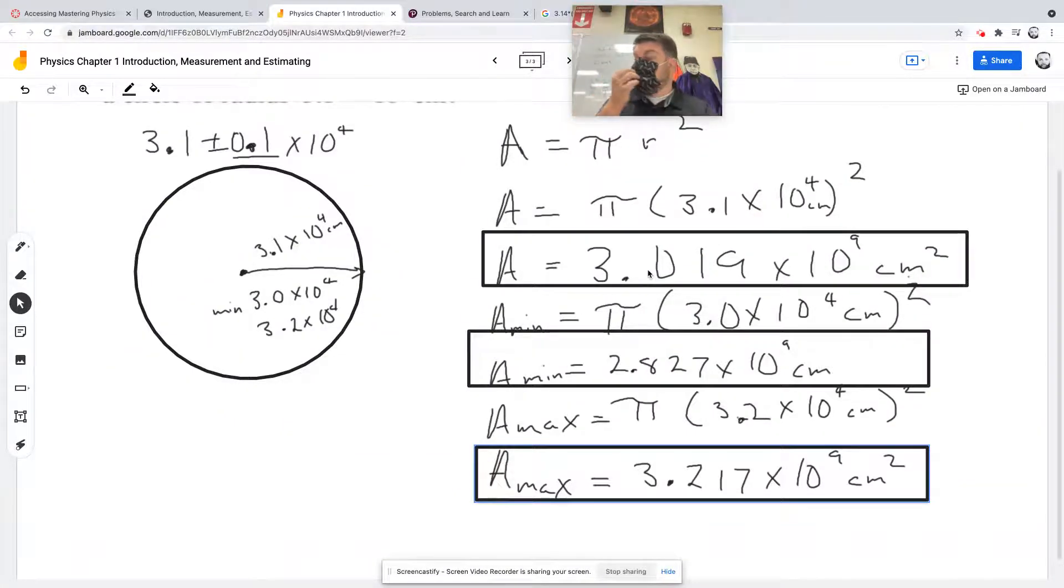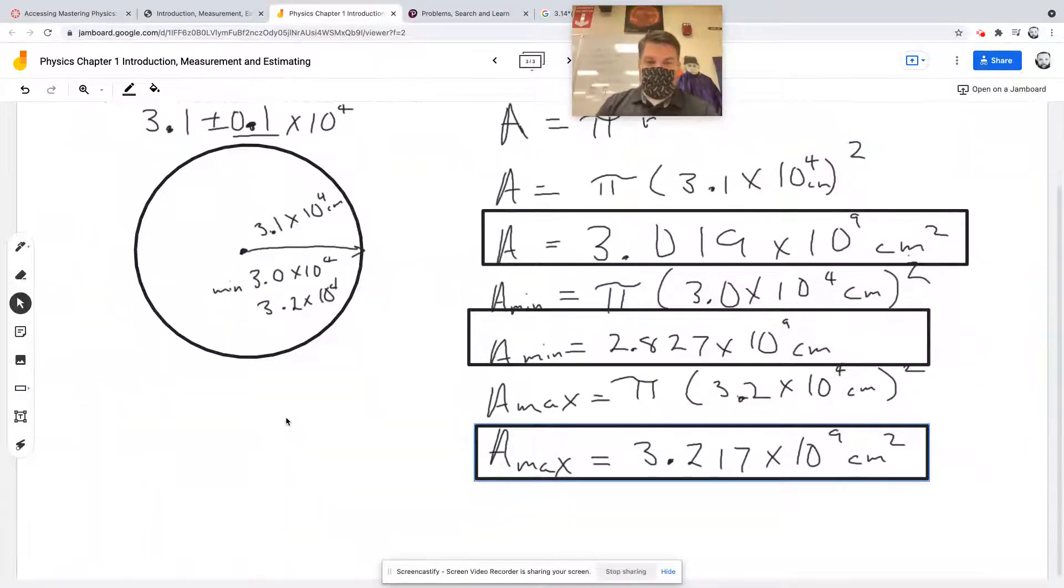To get the uncertainty of the area, we take the average of the difference. The easiest way is using delta A. The Greek letter delta means change. Delta A equals one half